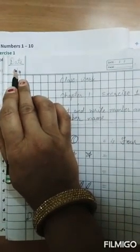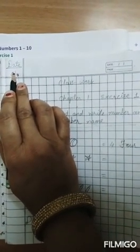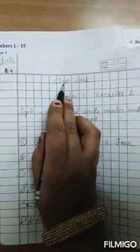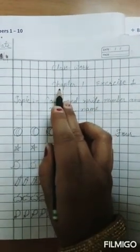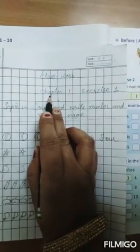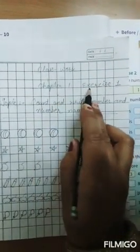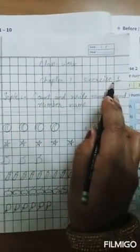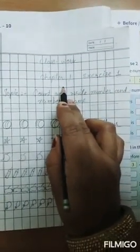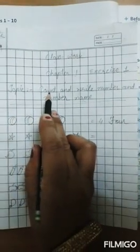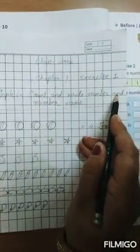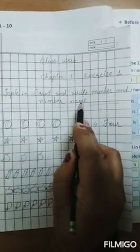As earlier, firstly mention the date, then class work. Then leave a line and in the next line write Chapter 1 Exercise 1. Again leave a line and write the topic: Count and write number and numbers name.